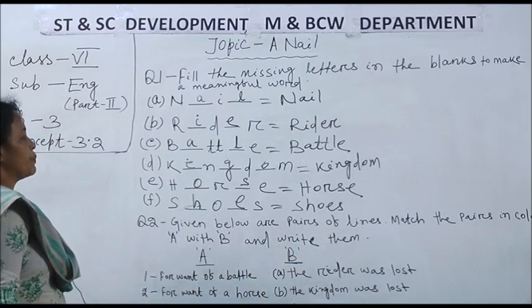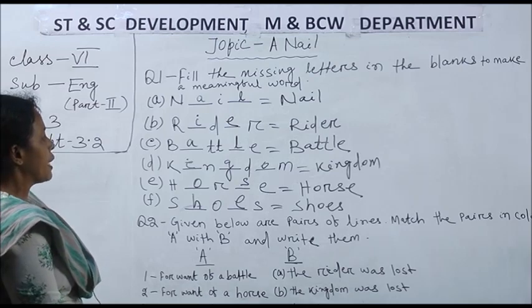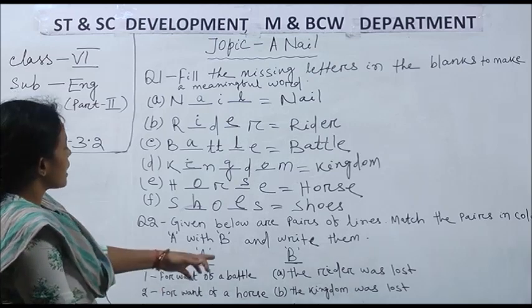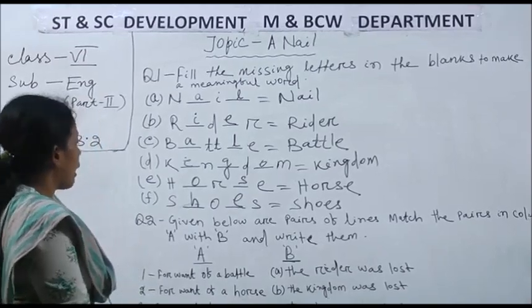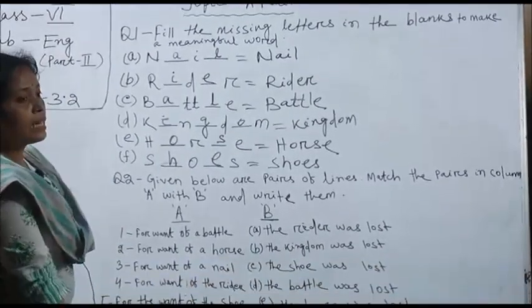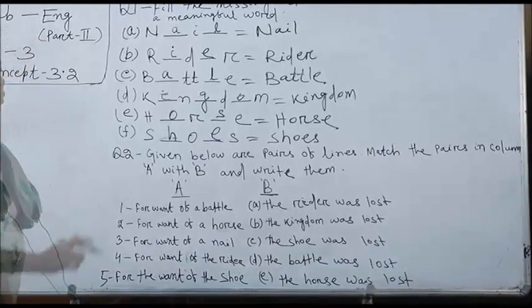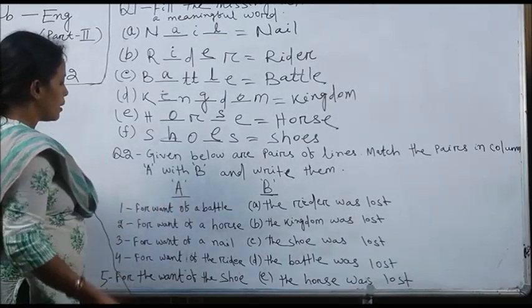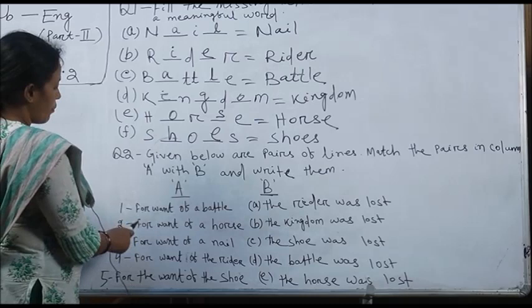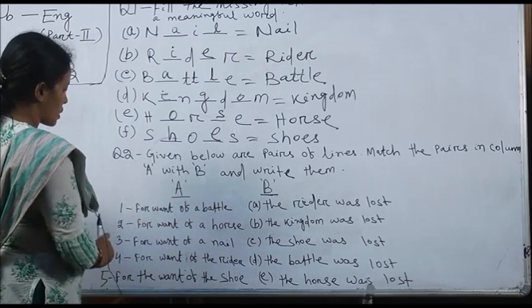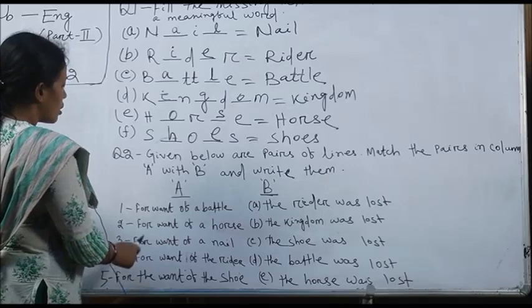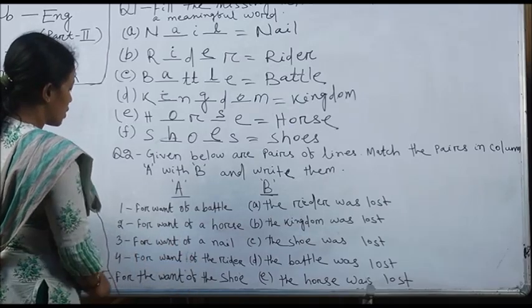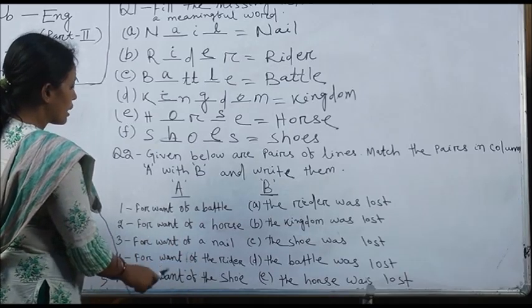Now question 2. Given below are pairs of lines. Match the pairs in column A with B and write. In column A: for want of a battle, for want of a horse, for want of a nail, for want of the rider, for the want of the shoe.